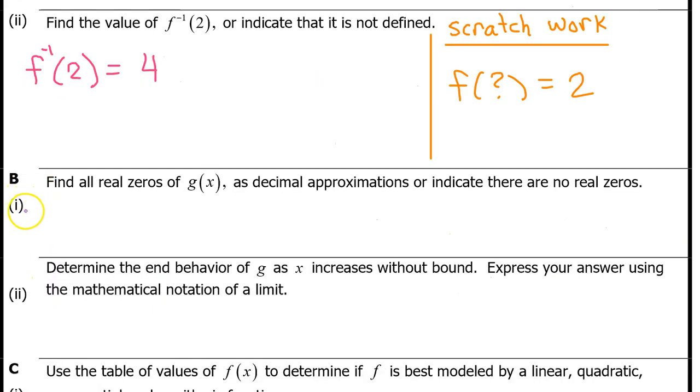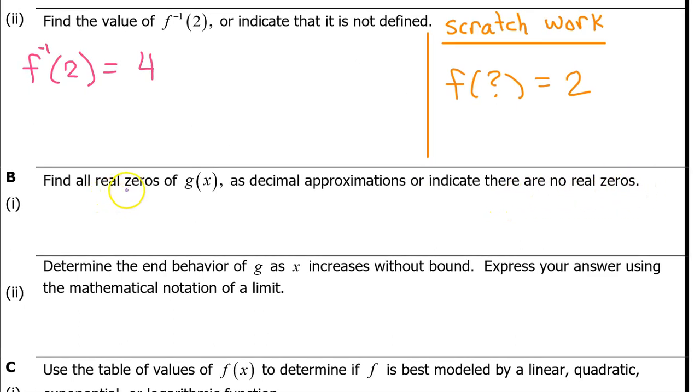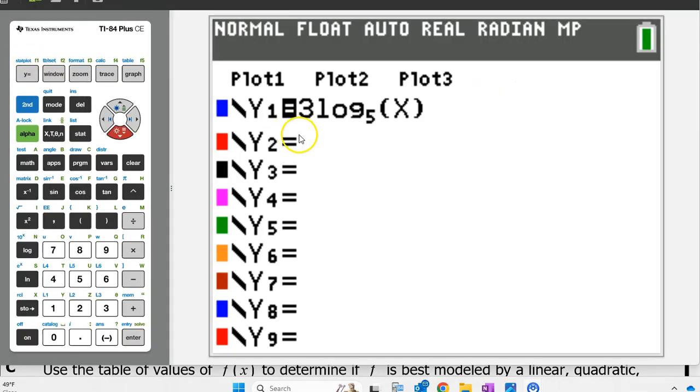B part 1: Find all real zeros of g of x as decimal approximations or indicate that there are no real zeros. The zeros of g are where g of x is equal to 0. I'm going to show you how to solve this in two ways. One method is to use the graphing calculator to solve the equation g of x equals 0.